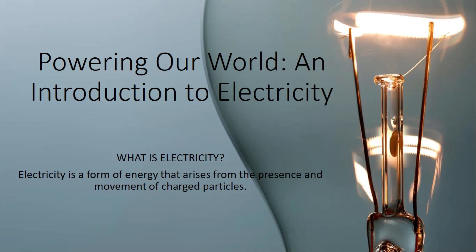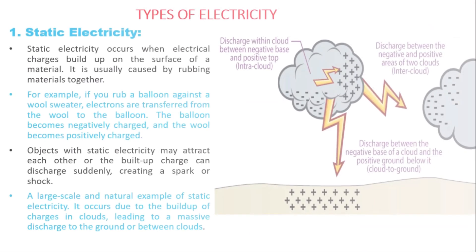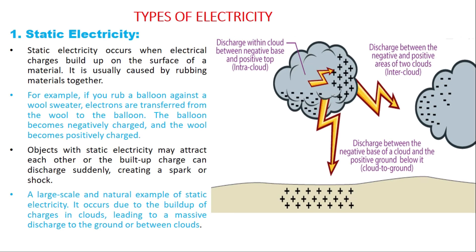Now, what are the types of electricity that exist? There are mainly two types of electricity. The first one is known as static electricity, which occurs due to the build-up of electrical charges on the surface of a material or a body.